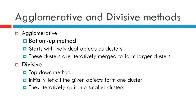Agglomerative clustering method is also called the bottom-up method. We will see with the help of an example later why it is called a bottom-up method. We start with individual objects and assume each of them to be a cluster. Using some criteria we merge these clusters iteratively until we form one final big cluster, and hence they are called bottom-up method.